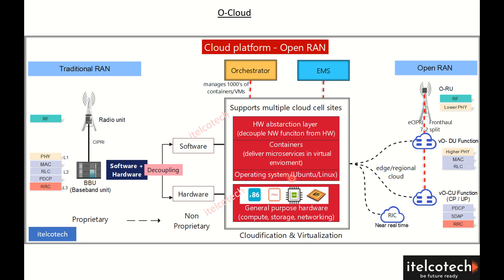We can put a new operating system on top of that hardware — from open source such as Linux — and then enable virtual machines or containers. Containers represent cloud-native functions at a more advanced level. Virtual machines can also be used, and functions such as the CU, DU, and RU can be extracted from the underlying hardware through a hypervisor.